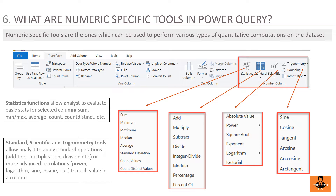Scientific functionality is used to calculate absolute value (distance from 0 without considering direction), square root, exponent, and other operations applicable to numerical column values. Trigonometry is used to apply trigonometrical functions on the data, such as sine, cosine, tangent, etc.